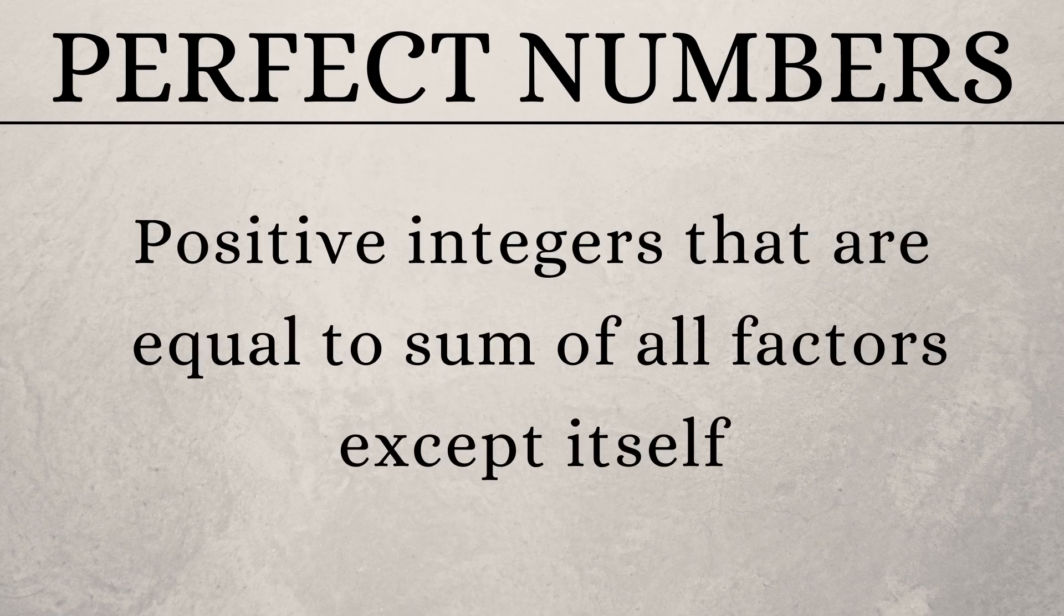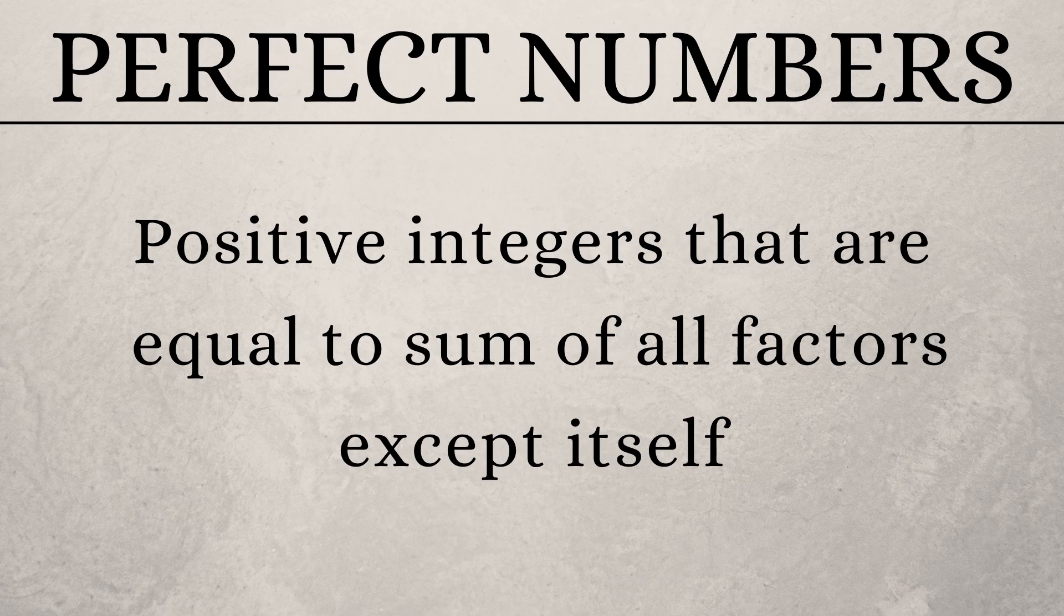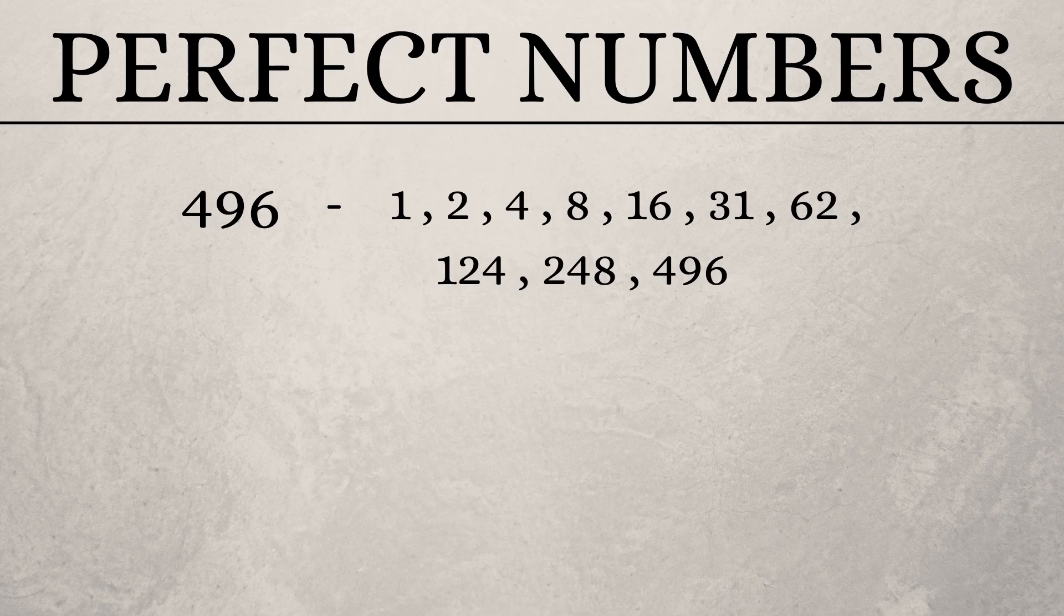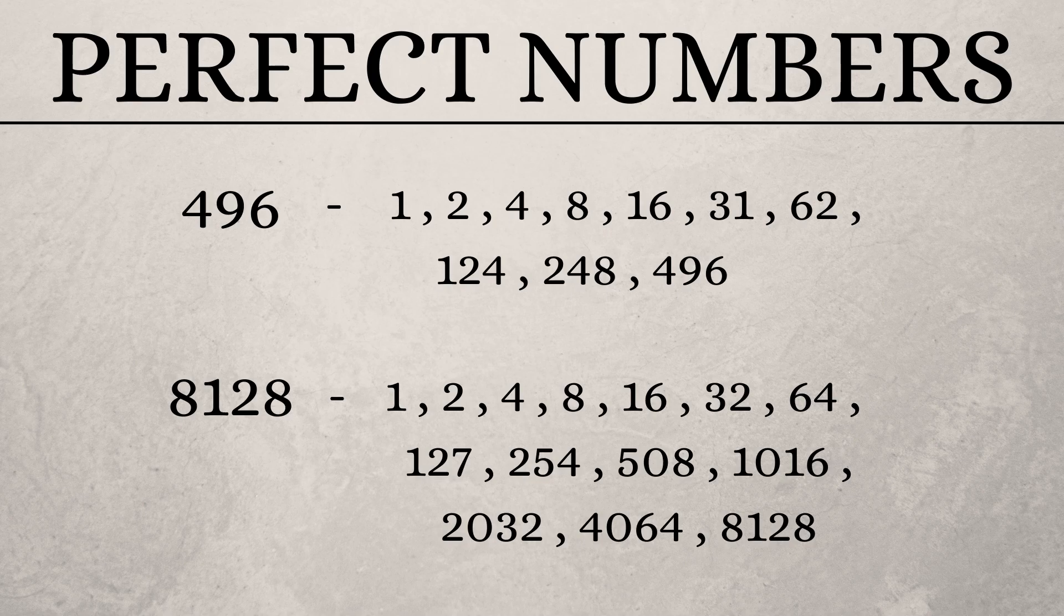a perfect number is any positive integer that is equal to the sum of all of its factors except for the number itself. Though it looks like perfect numbers are very common, this is not the actual case. The third perfect number is 496, the factors of which are shown here. And the fourth perfect number is 8128. The factors of this number are also listed here. You could probably add them and verify yourself.